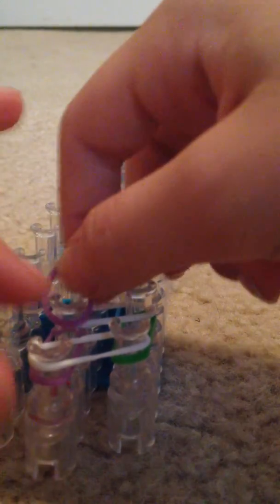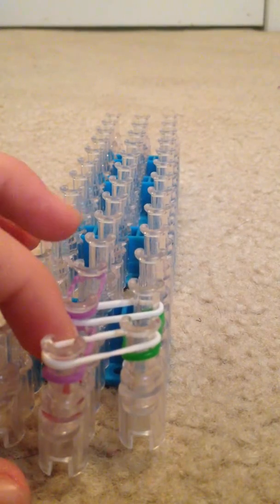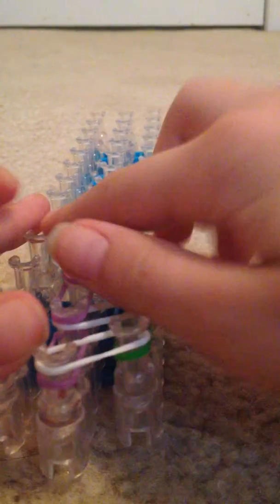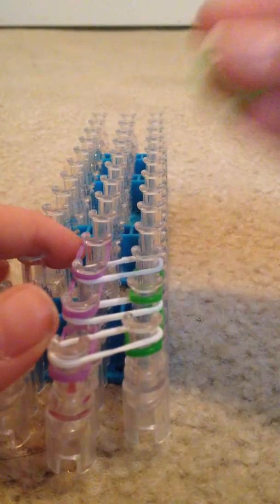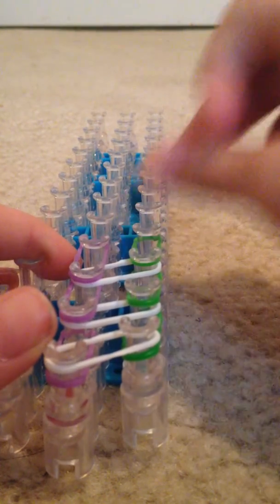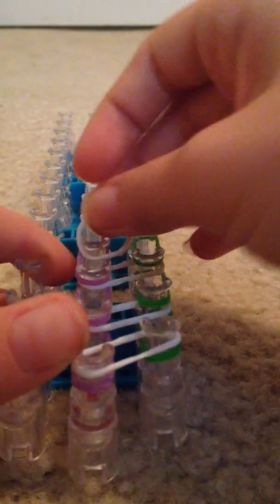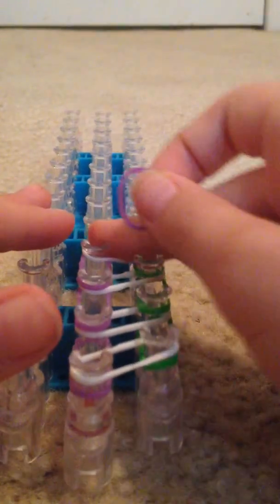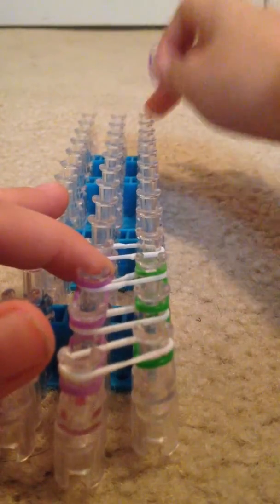You're going to repeat those steps all the way up. Do the same thing over and over again. Purple forward, green forward, white across. One more time. Purple forward, green forward, and then white across. Again, repeat these steps until the end of the loom.